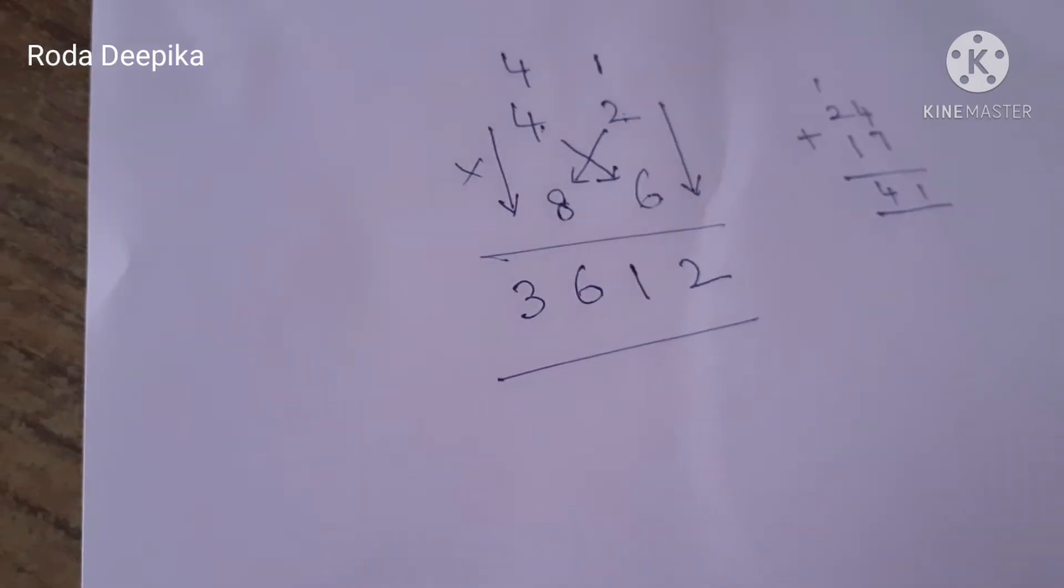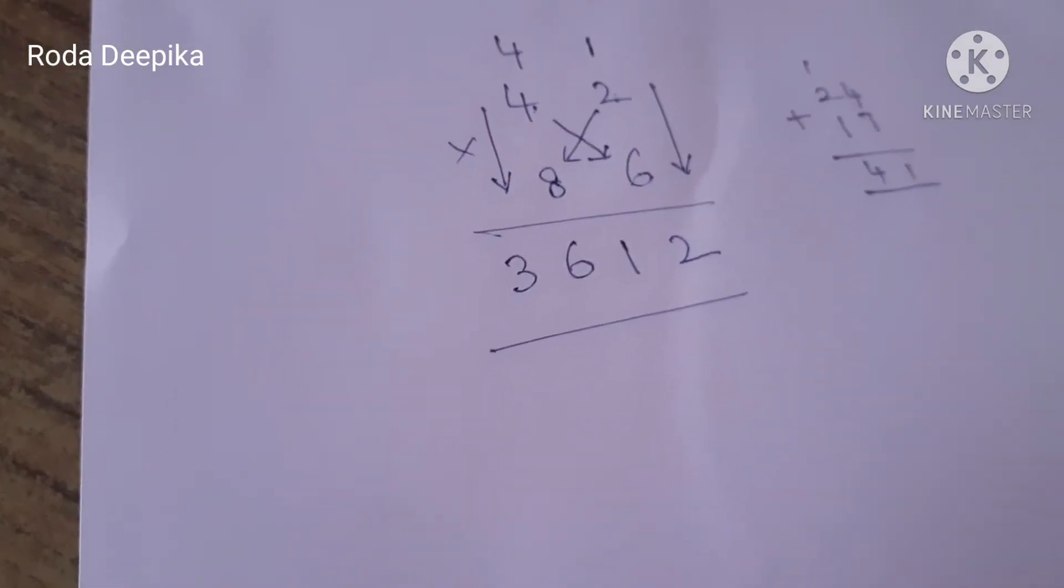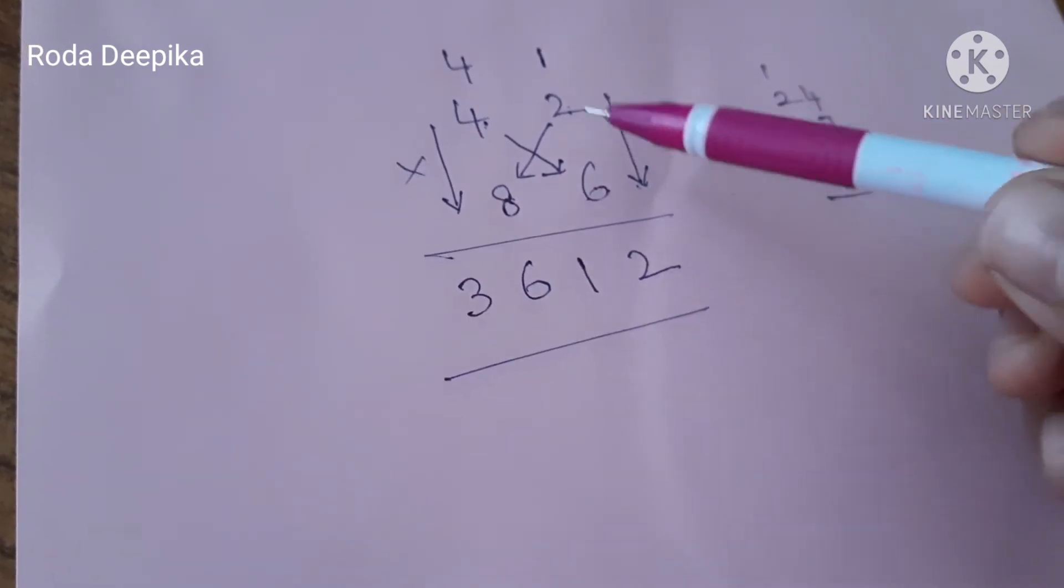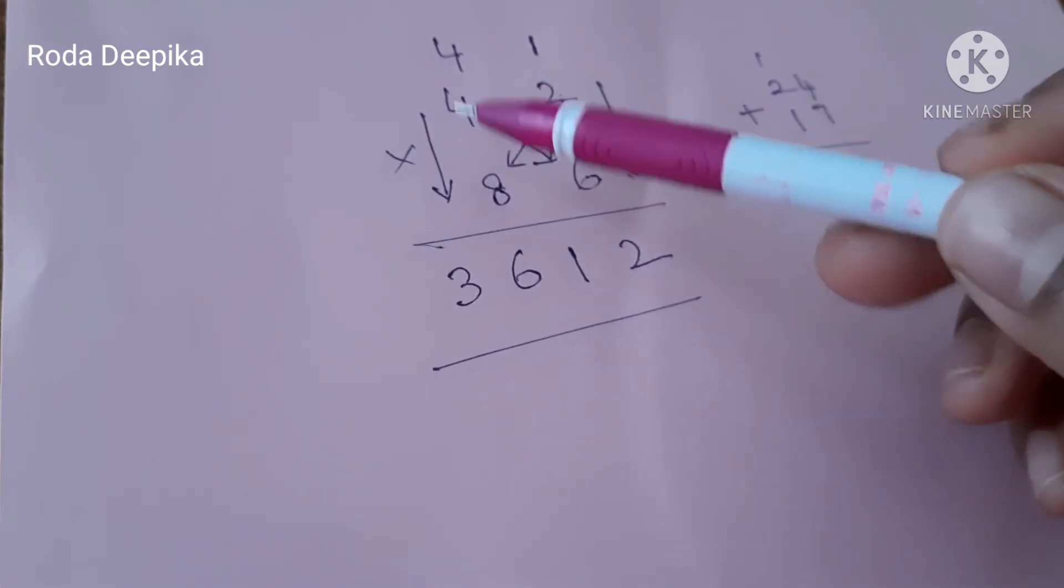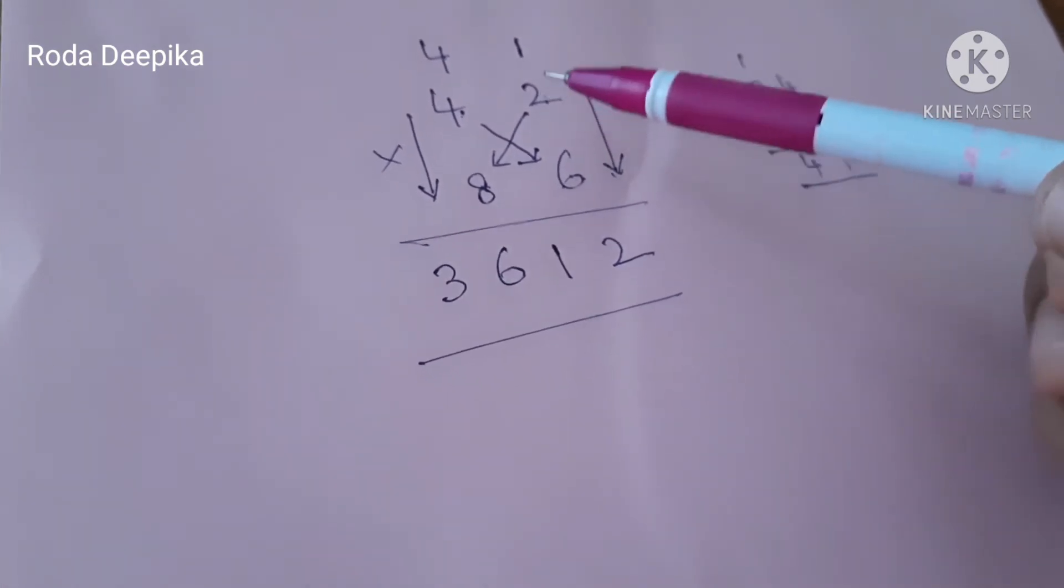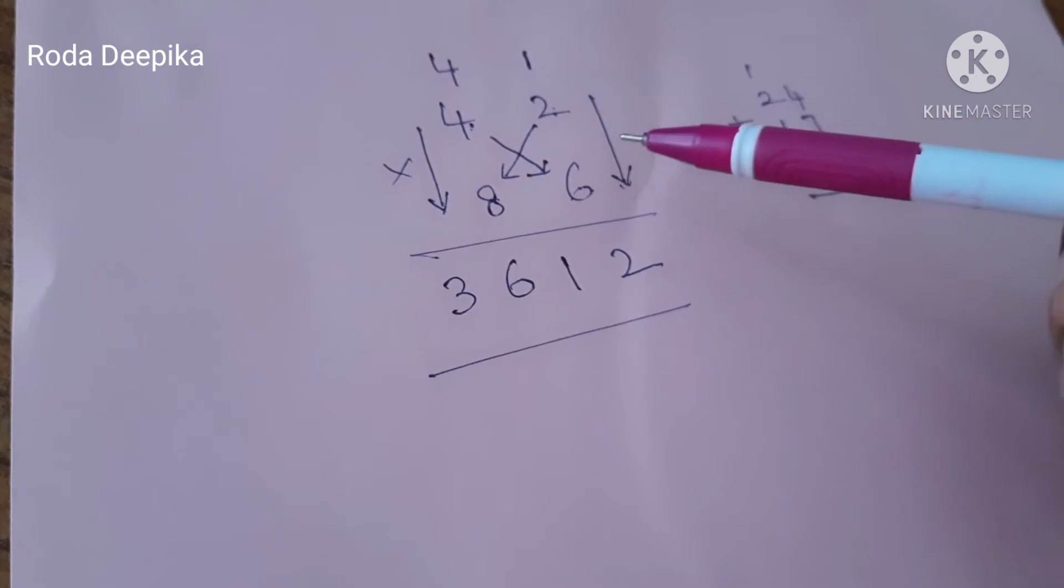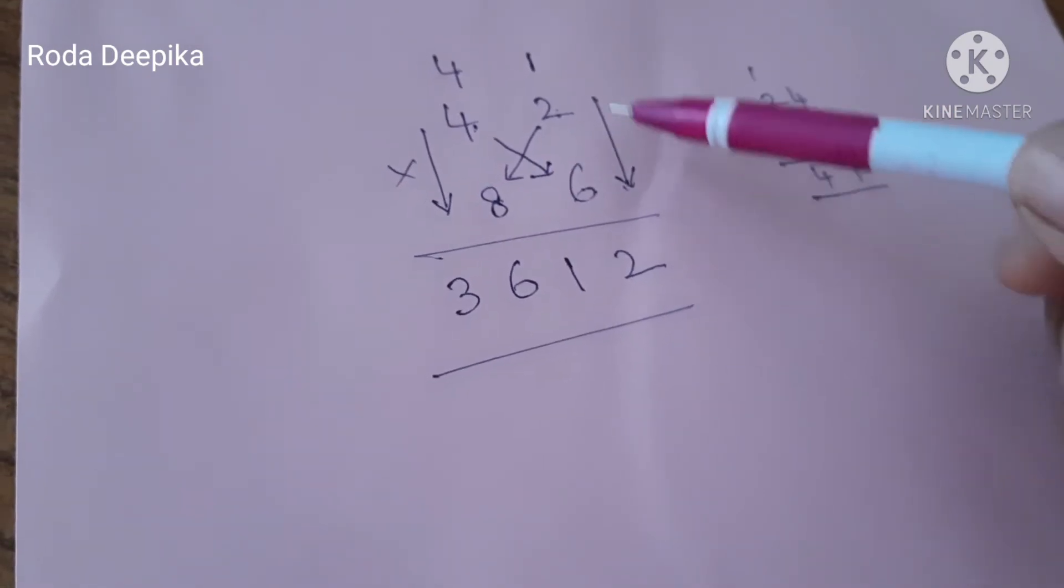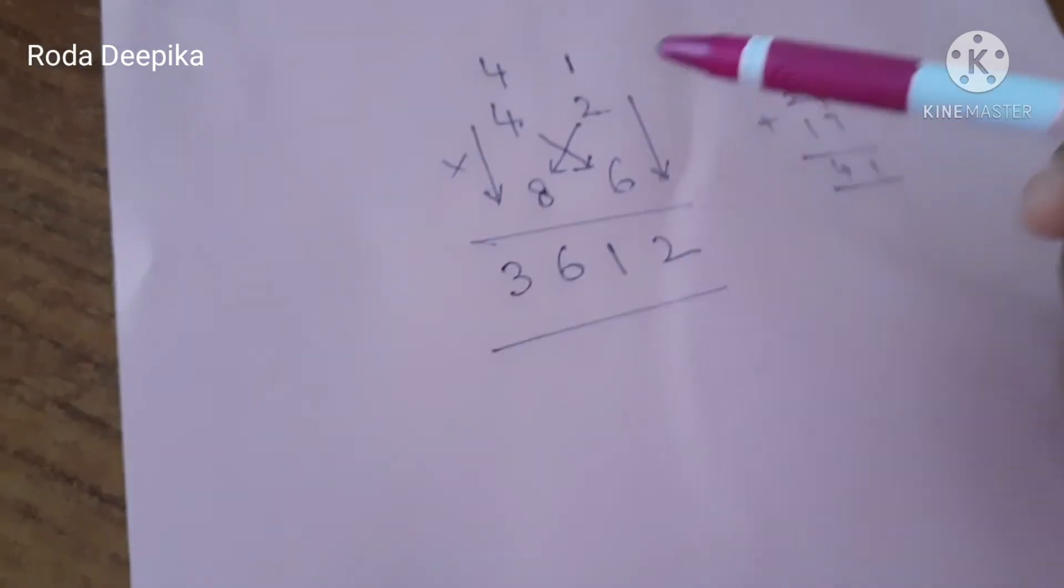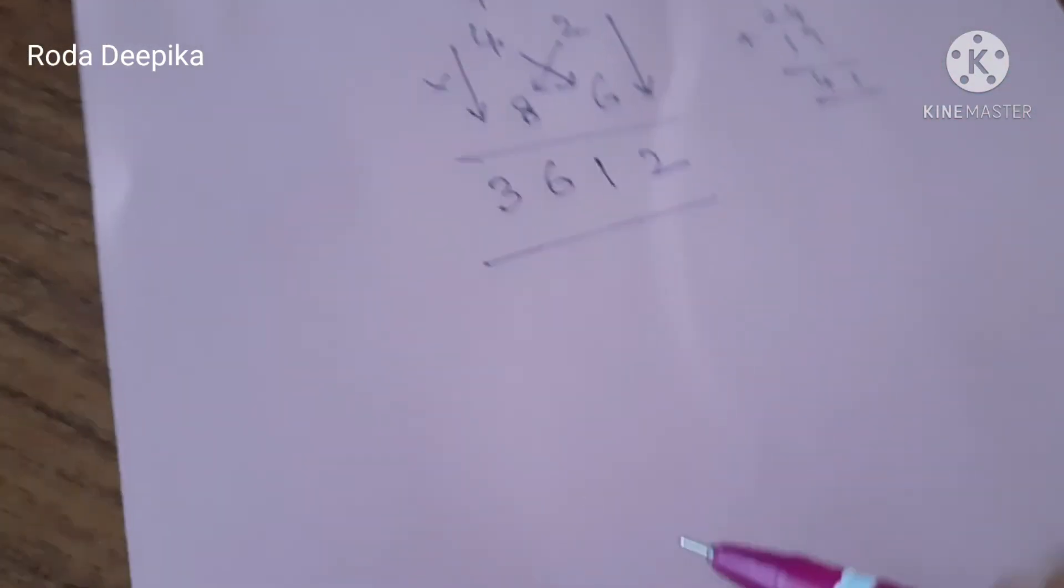If you follow the arrow marks it will be easy to solve. Once again let me explain the procedure. First we have to multiply the 1s digit together. Then we have to cross multiply the digits and then add and step 3 is to multiply the 10s digit together.